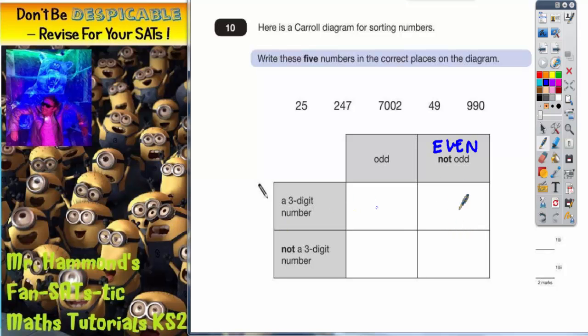Anything on this row must be three digits and anything on this row must not be three digits. So it can be anything else other than three digits. It could be one digit, two digits, four digits, five digits. It just can't be three digits. Now the easiest thing to do is basically pick a column first.